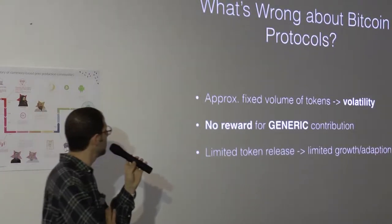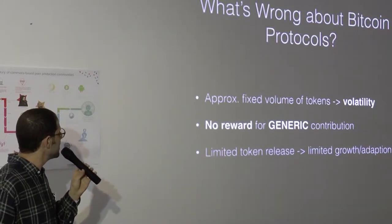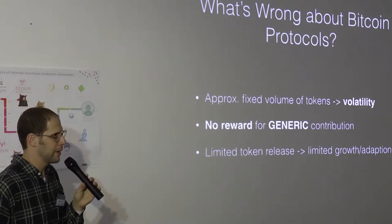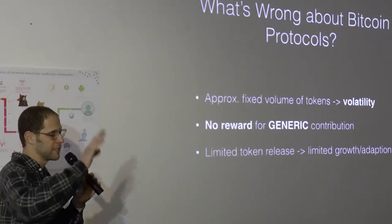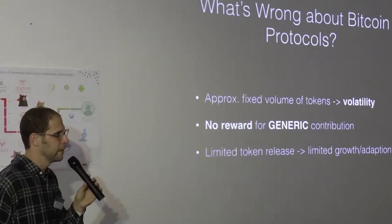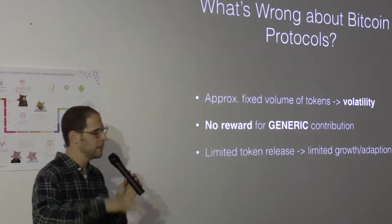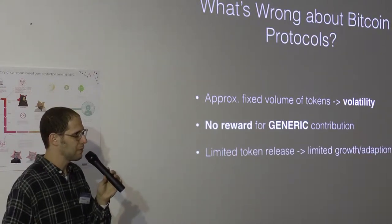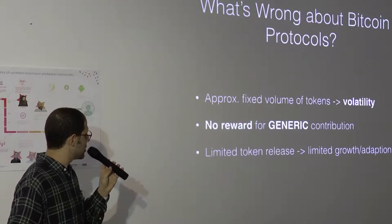So what's wrong about the Bitcoin protocols? I'll just speed up a little bit. Firstly, approximately there are fixed volumes of tokens. Right now there are a certain amount of tokens in circulation. And that leads to high volatility. If there's fluctuation in demand, supply is fixed. If there's fluctuation in demand, there will be fluctuation in the rate of tokens. And that's one of the biggest barriers for adoption of Bitcoin.